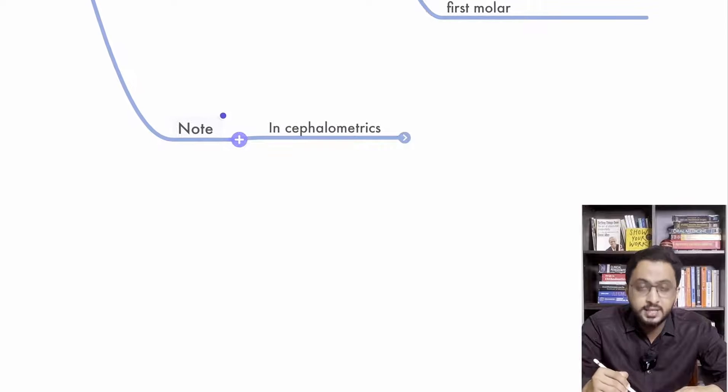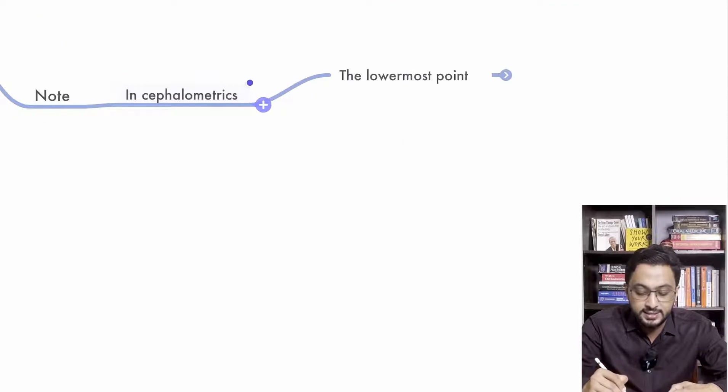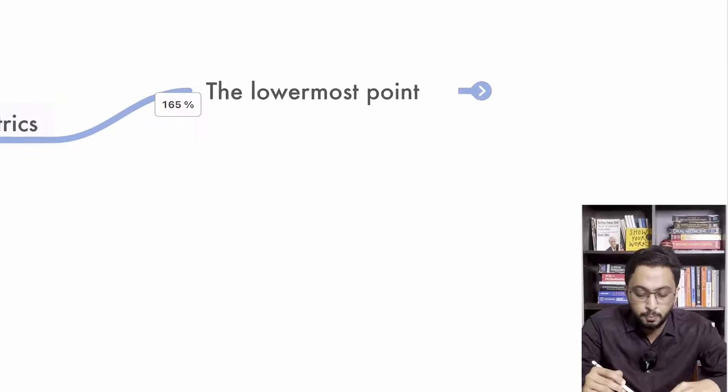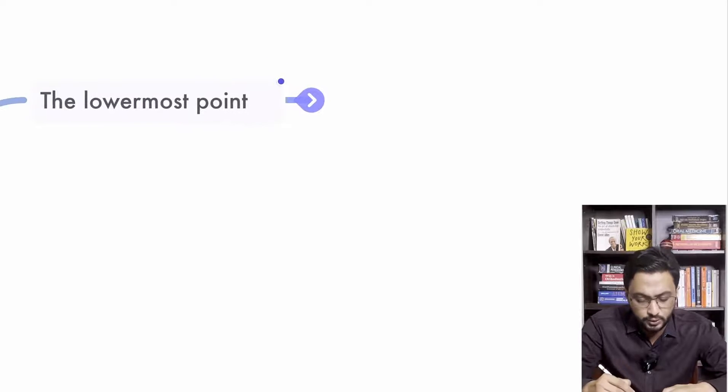Now one more point to note here. In cephalometrics, it has a slightly different definition. It says the lowermost point, that is the Key Ridge is the lowermost point.